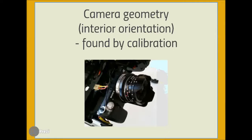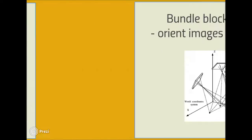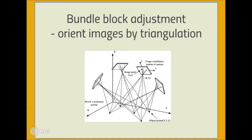A real camera will differ from an ideal model by using a relatively complex lens, a camera housing not built for stability, and an image recording surface which may be neither planar nor perpendicular to the image ray. This camera geometry is determined by calibration. The camera location is described by the coordinates of the center of projection and three angles expressing its rotation. The location parameters are calculated indirectly using well-identified points common to multiple images. Every such point has an image ray from the projection center to the object point. If all bundles of rays from multiple images are intersected, a dense network is created, and using a method of triangulation known as a bundle block adjustment, any number of images can be simultaneously oriented.